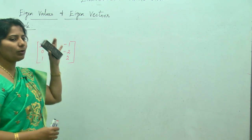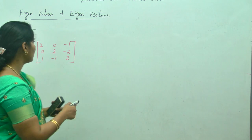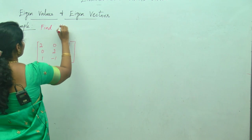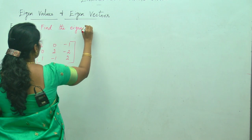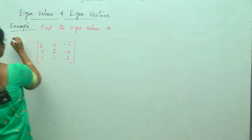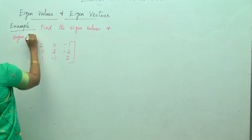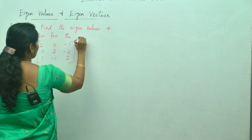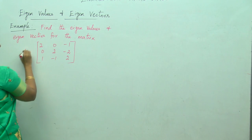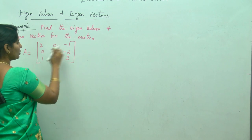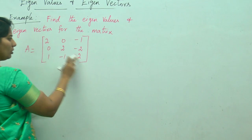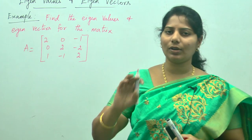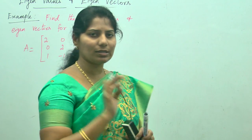Now I am going to show you the example for eigenvalues and eigenvectors. Find the eigenvalues and eigenvectors for the matrix A equals 2, 0, -1, 0, 2, -2, 1, -1, 2. This is one of the important questions for 16 marks. Definitely they will ask eigenvalues and eigenvectors for the 16 mark question.